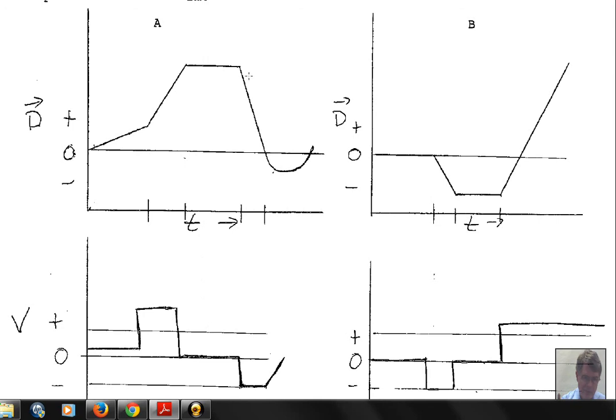In this next time interval, we have a negative slope. That's a negative velocity. The object is moving in the negative direction. So we have negative velocity.